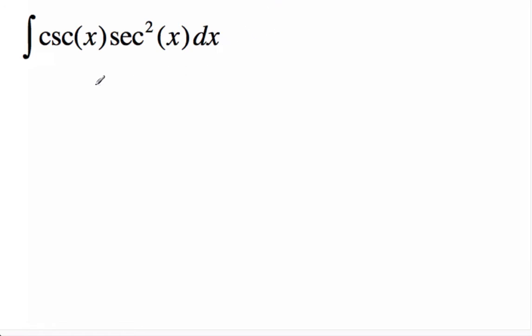Okay, so to handle this integral, we can use a trig identity. We can say this is equal to cosecant x times 1 plus tan squared x.